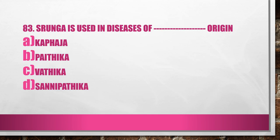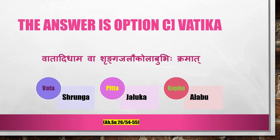Question No. 83. Shrinka is used in disease of which origin? A. Kabacha, B. Paithika, C. Vatika, D. Sannipatika. For Vataja Roka we use Shrinka, Pittaja — Jaloka, Kaba — Alabu, in that order. The reference is Ashtanga Hradayam Sutra Stanam Chapter 26, Sloka 54-55. Answer is Option C, Vatika.